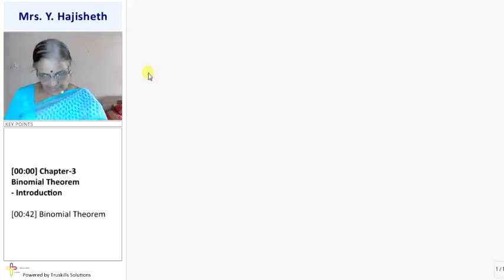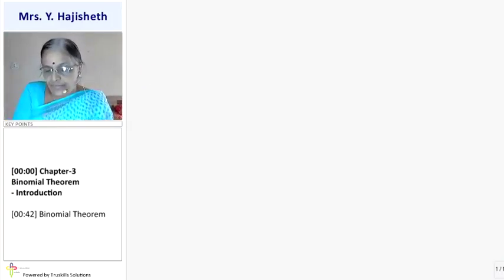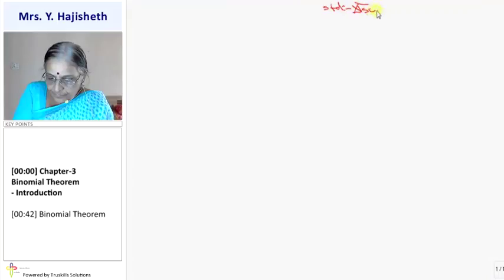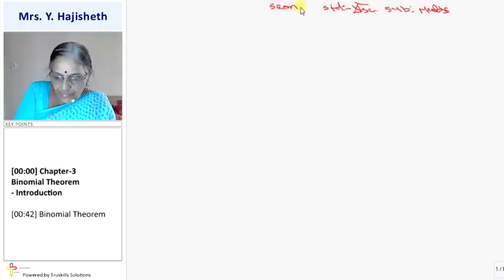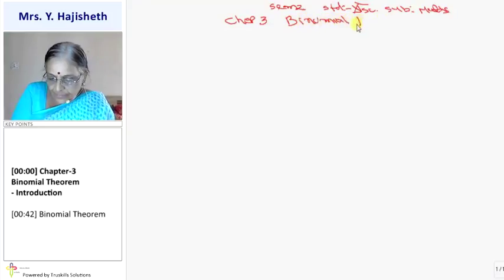So children, we completed chapter number 1 and chapter number 2 of semester 2. Standard 11 science, clear? We have completed chapter 1 and chapter 2 of semester 2. So now we start chapter number 3, that is Binomial Theorem.